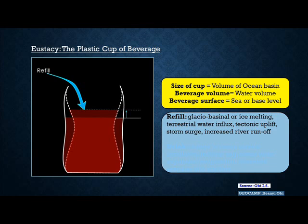Now imagine a refill case: every global change that increases the volume of ocean water is like adding more beverage or changing the container's volume. Examples of such processes would be glacial or ice melting, water inflow from terrestrial sources, tectonic changes which can lead to uplift, storm surge, and increased weather runoff. These are all processes that can either change the volume of the container or increase the volume of ocean water — in this case, the volume of beverage in the cup.